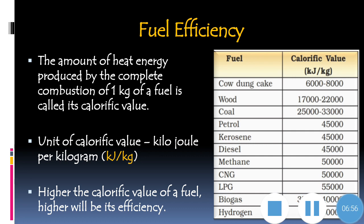This is the exact table given in your NCERT text. Here you can see the calorific value of different fuels. The first fuel is cow dung cake, with a calorific value of 6,000 to 8,000 kilojoules per kilogram. Going downwards, the calorific values of different fuels increase. For hydrogen, it will be 1,50,000 kilojoules per kilogram. So hydrogen is the most efficient fuel in this list — the fuel with the highest calorific value is the most efficient.